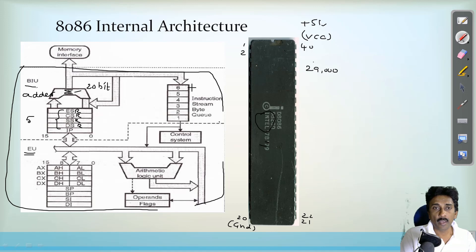And we have a six bytes long queue provided and it is operated with the principle of FIFO. Whereas in the 8085 microprocessor the queue was not there. In the 8085 microprocessor queue was not there. And instead of the queue, there is an instruction register.